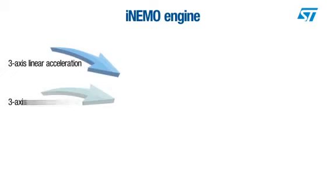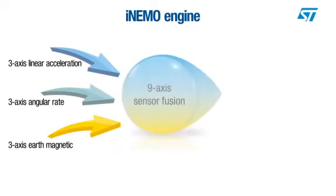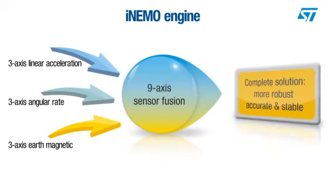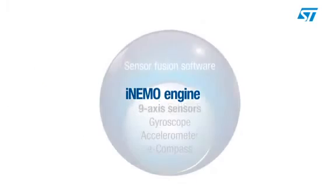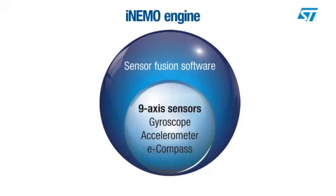The iNemo engine is a new advanced software engine that fuses accelerometer, gyroscope and magnetometer data to deliver accurate and reliable motion sensing information that is easy to integrate into smart consumer devices. The iNemo engine fuses sensor data using advanced algorithms based on true high number of states adaptive Kalman filtering.